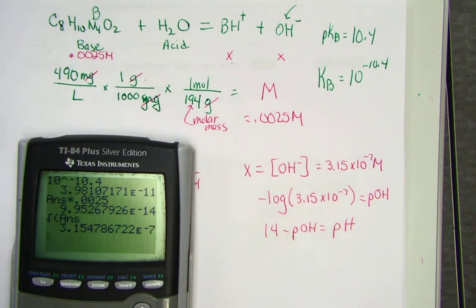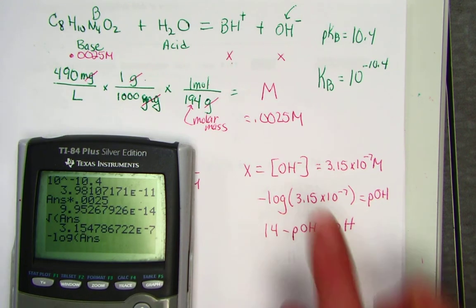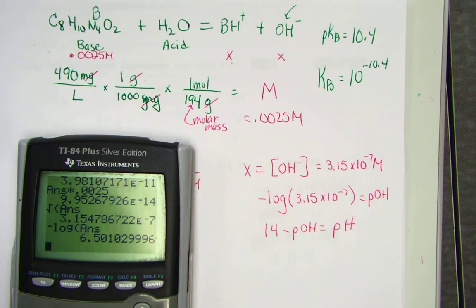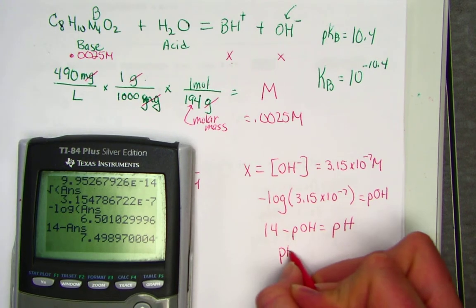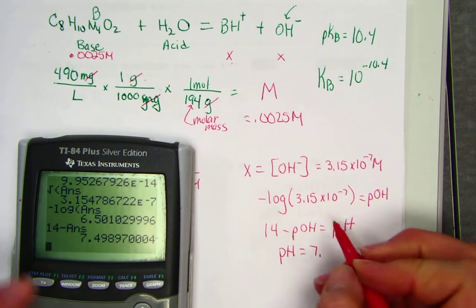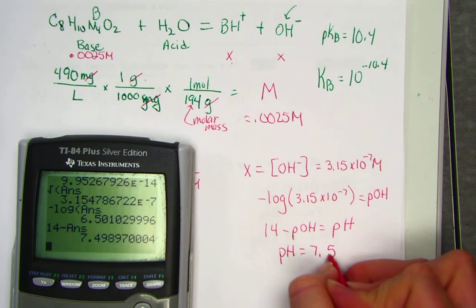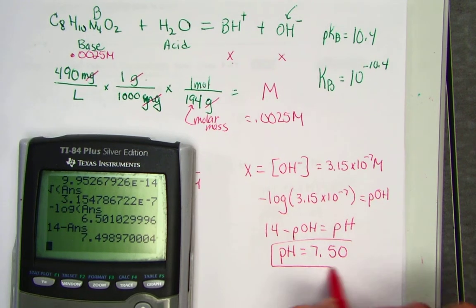So, let's go negative log of our answer. Negative log of the hydroxide gets us a pOH of 6.5. 14 minus that answer gives us a pH for caffeine, 7.498, maybe somewhere like 7.50 pH units.